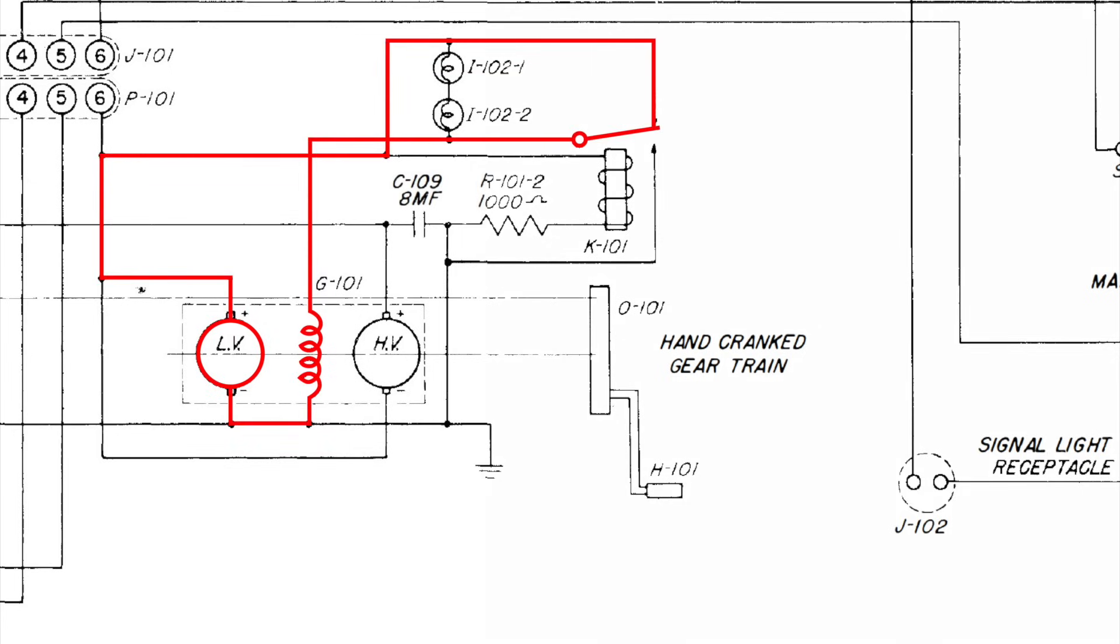The resulting current flows through the normally closed contacts of relay K101 and into the field coil on the rotor, reinforcing the field and boosting the generator output voltage. Meanwhile, some of this current also flows through the K201 relay coil, the current being limited by resistor R201. When the generator reaches a certain speed, the current becomes sufficient to operate relay K201, opening the normally closed contact. This does two things.